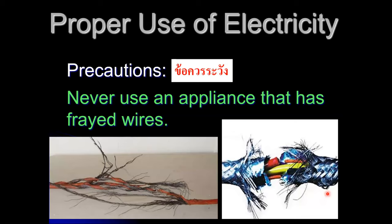Number one, never use an appliance that has frayed wires. If you accidentally touch a bare part, open part of the wire with your hands, current, current means electricity will flow through your body. You can get an electric shock.